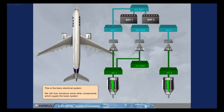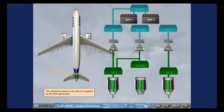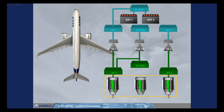This is the basic electrical system. We will now introduce some other components which supply the basic system. The electrical network can also be supplied by the APU generator. These three generators are all identical and any one of them can supply the entire aircraft electrical needs.